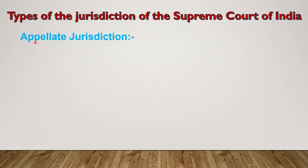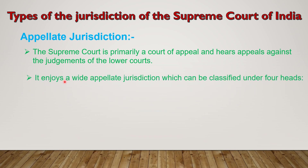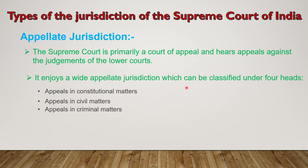The next type of jurisdiction is appellate jurisdiction. The Supreme Court is primarily a court of appeal and hears appeals against the judgments of lower courts. It enjoys a wide appellate jurisdiction which can be classified under four heads: appeals in constitutional matters, appeals in civil matters, appeals in criminal matters, and appeals by special leave.